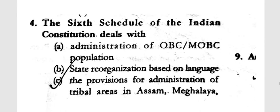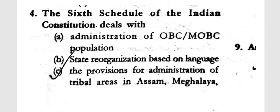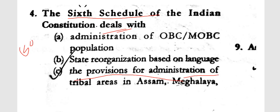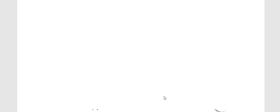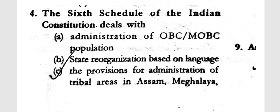The Sixth Schedule of the Indian Constitution deals with the provisions for administration of tribal areas in Assam, Meghalaya, Tripura, and Mizoram.